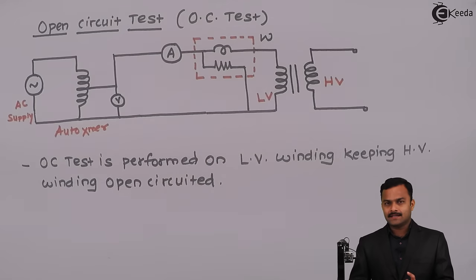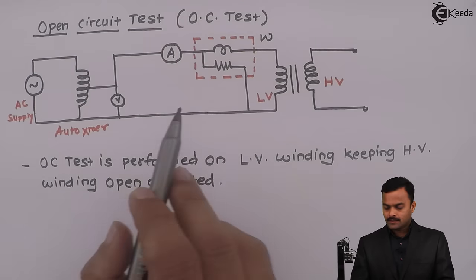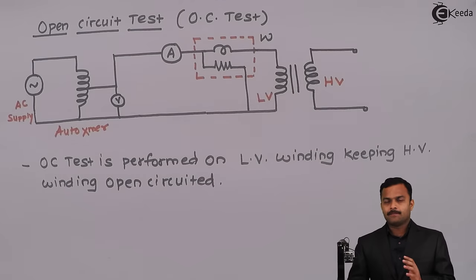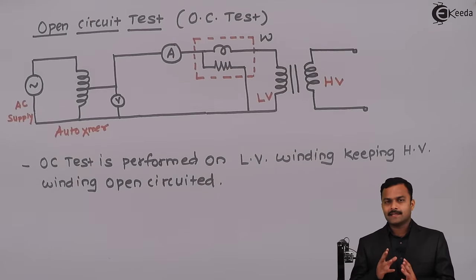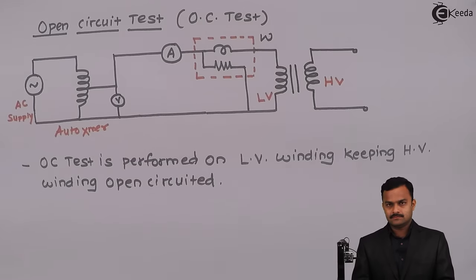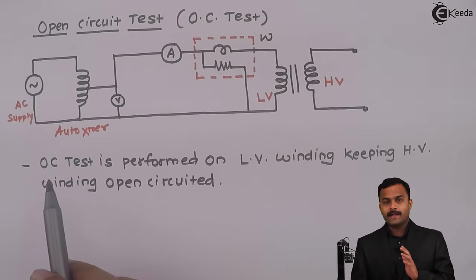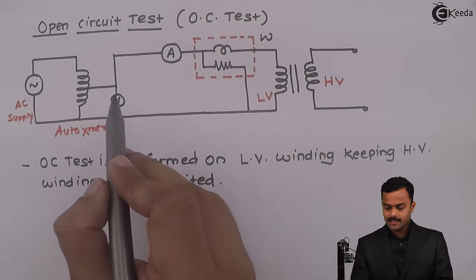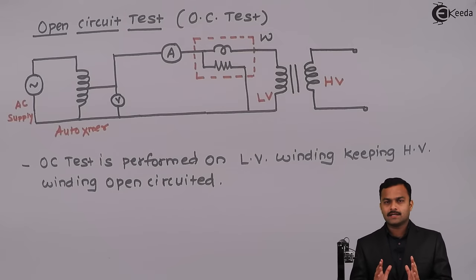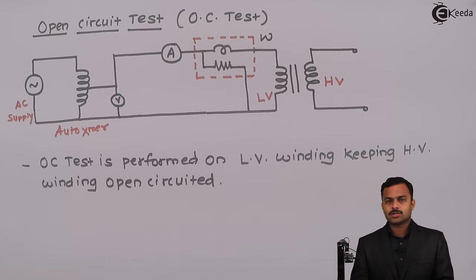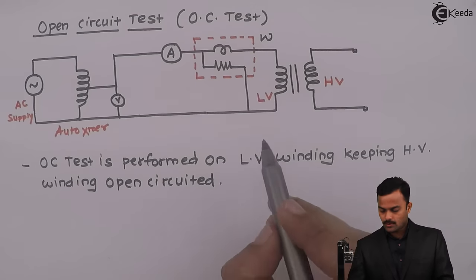If the kVA rating of a transformer is the same on primary and secondary, you get very little current when applying voltage to the high voltage side. For example, if kVA is 1 kVA, low voltage side is 100 V, and high voltage side is 10,000 V, then on the high voltage side you get a very small current that cannot be measured by the ammeter. Also, a very high voltage would be applied which the voltmeter cannot measure, so because of these meter restrictions we perform the open circuit test on the low voltage winding.